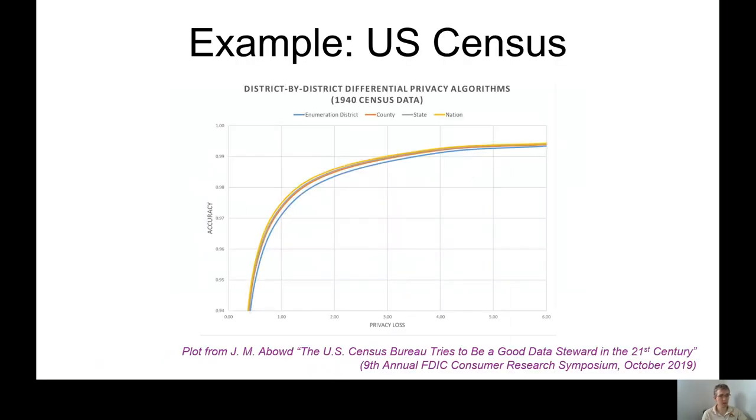One example of such dilemma in practice is what the US Census Bureau is facing. After census data is collected and analyzed, it is supposed to be released to the public. In doing so they're facing two conflicting goals. Data should be made available as much as possible while at the same time privacy of the individuals should be preserved. It should also be protected against attacks such as aggregation of multiple data sources.